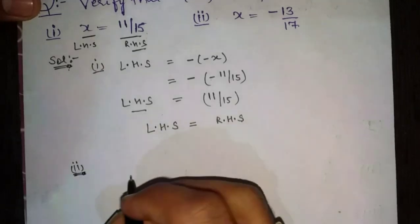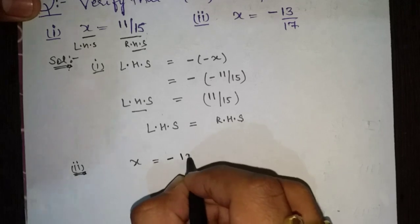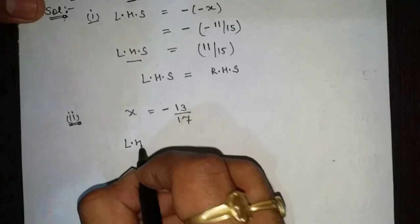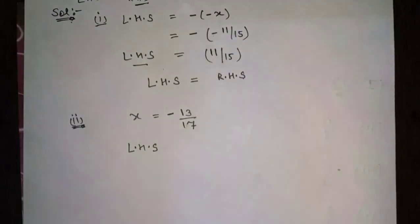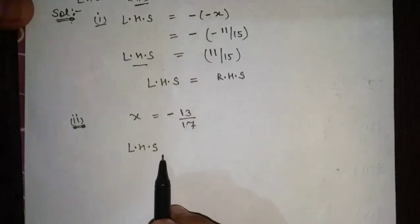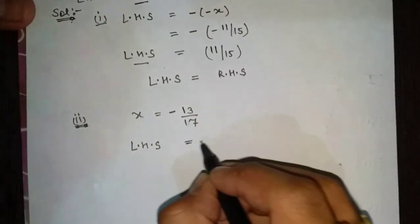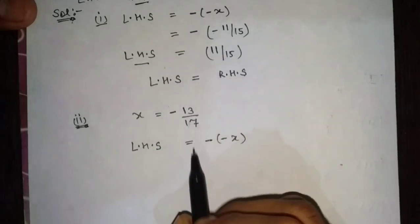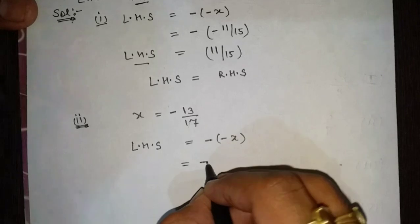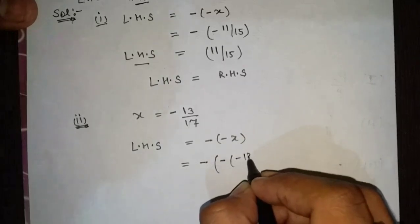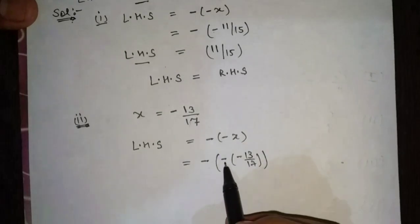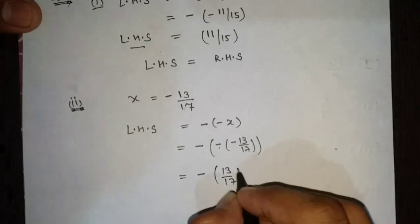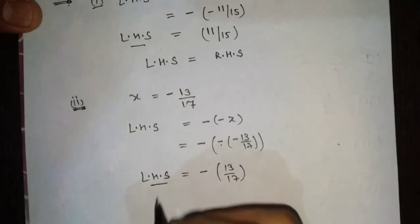Now we check the second sum. x equals to minus 13 by 17. So left hand side: we solve left hand side which is equal to minus of minus x, that is minus of minus of minus 13 by 17. Minus minus gives plus, so it is equal to minus 13 by 17. This is the left hand side.